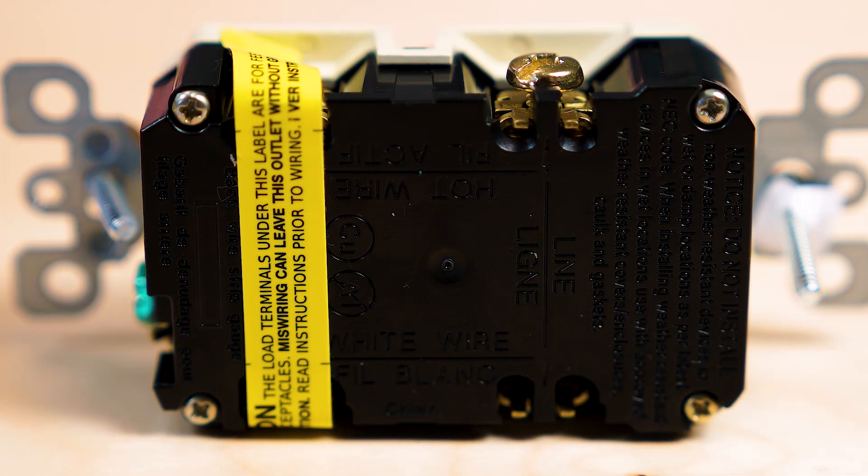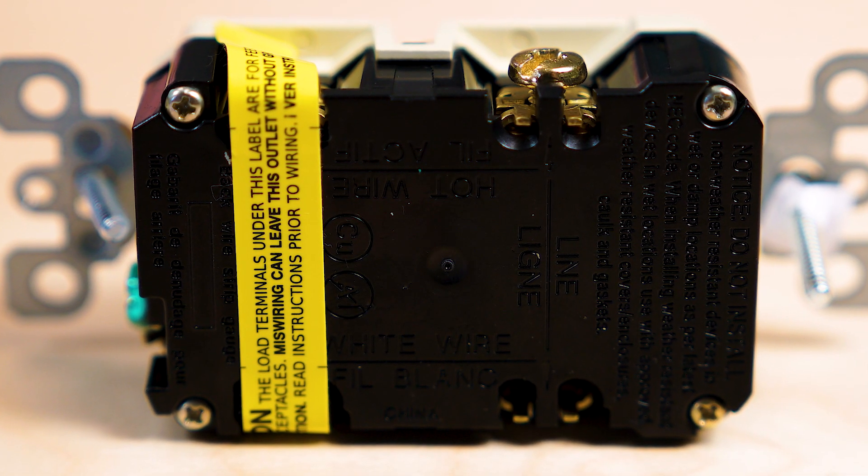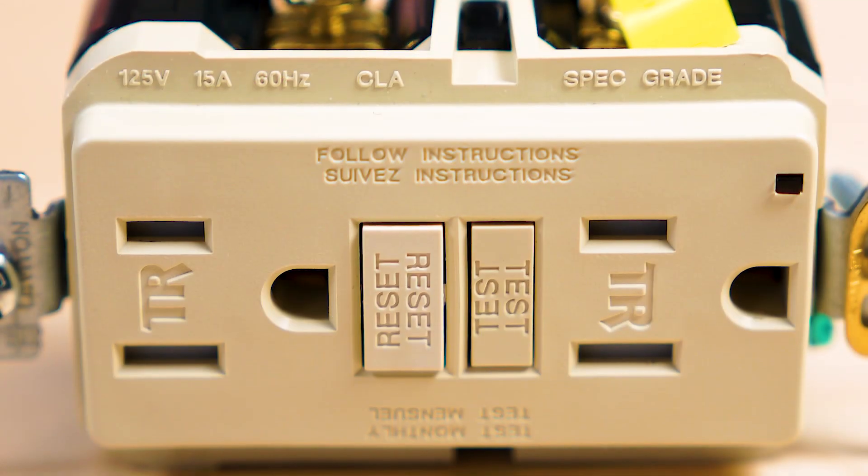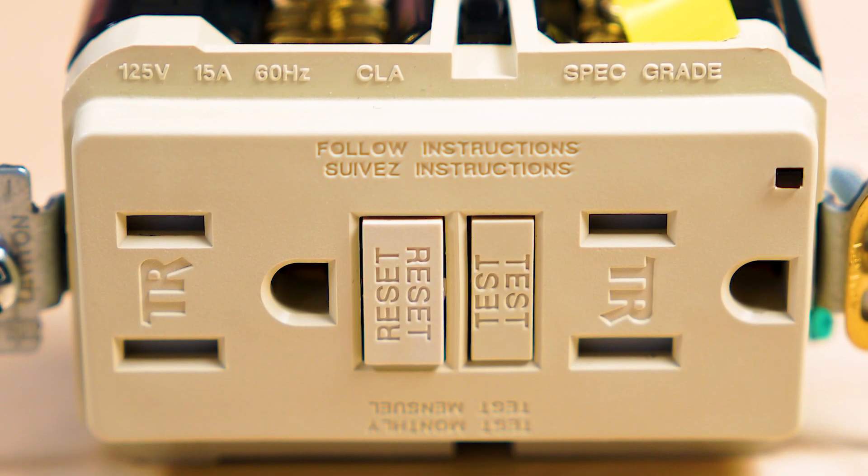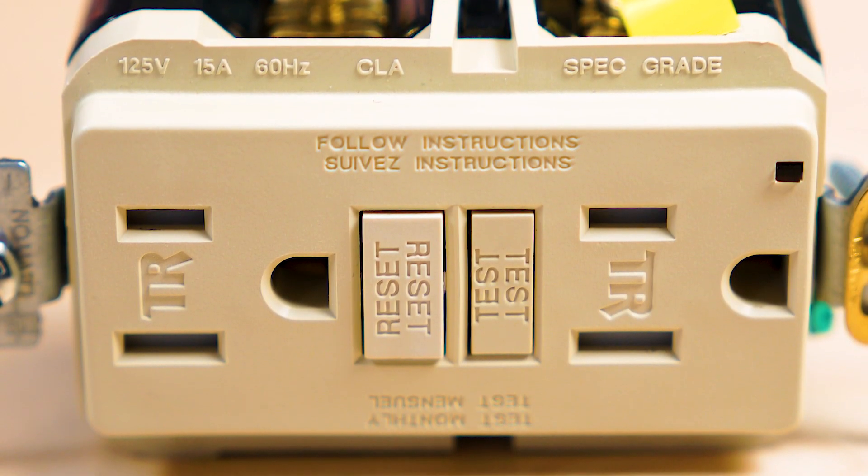GFCI outlets are held together with four screws through the plastic housing. Removing them allows the front plastic face of the device to lift off, revealing the metal contact assembly and attachment backbone.